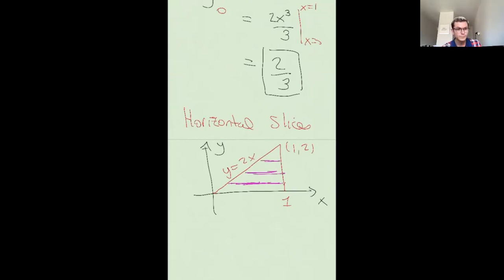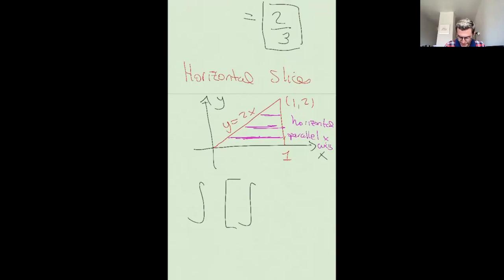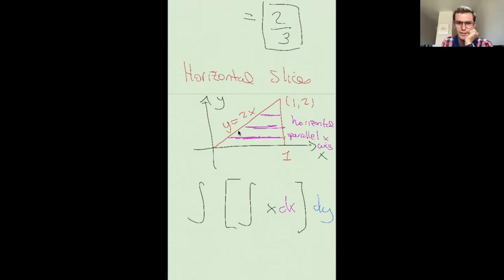Let's also do the horizontal slices so we have both written down. For horizontal slices we integrate X first — parallel to the X-axis — so X goes on the inside and Y goes on the outside. Now where do the horizontal lines start? They start at the hypotenuse. But since we're integrating with respect to X, we write the hypotenuse as X = Y/2.